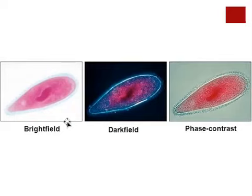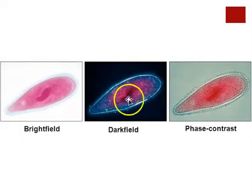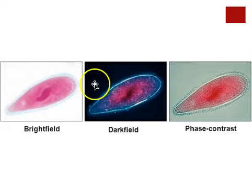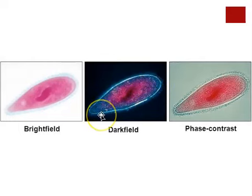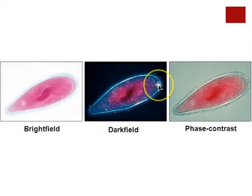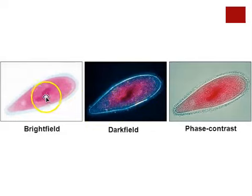Now look at the exact same cell under the dark field option. Under dark field, the object is going to be lighter than the background — the field is going to be dark to black. You're looking at the exact same cell with the exact same stain, but you're getting a different amount of detail. You're seeing different structures under dark field than you can see under bright field. It's just another tool in allowing us to understand the structure of these cells.